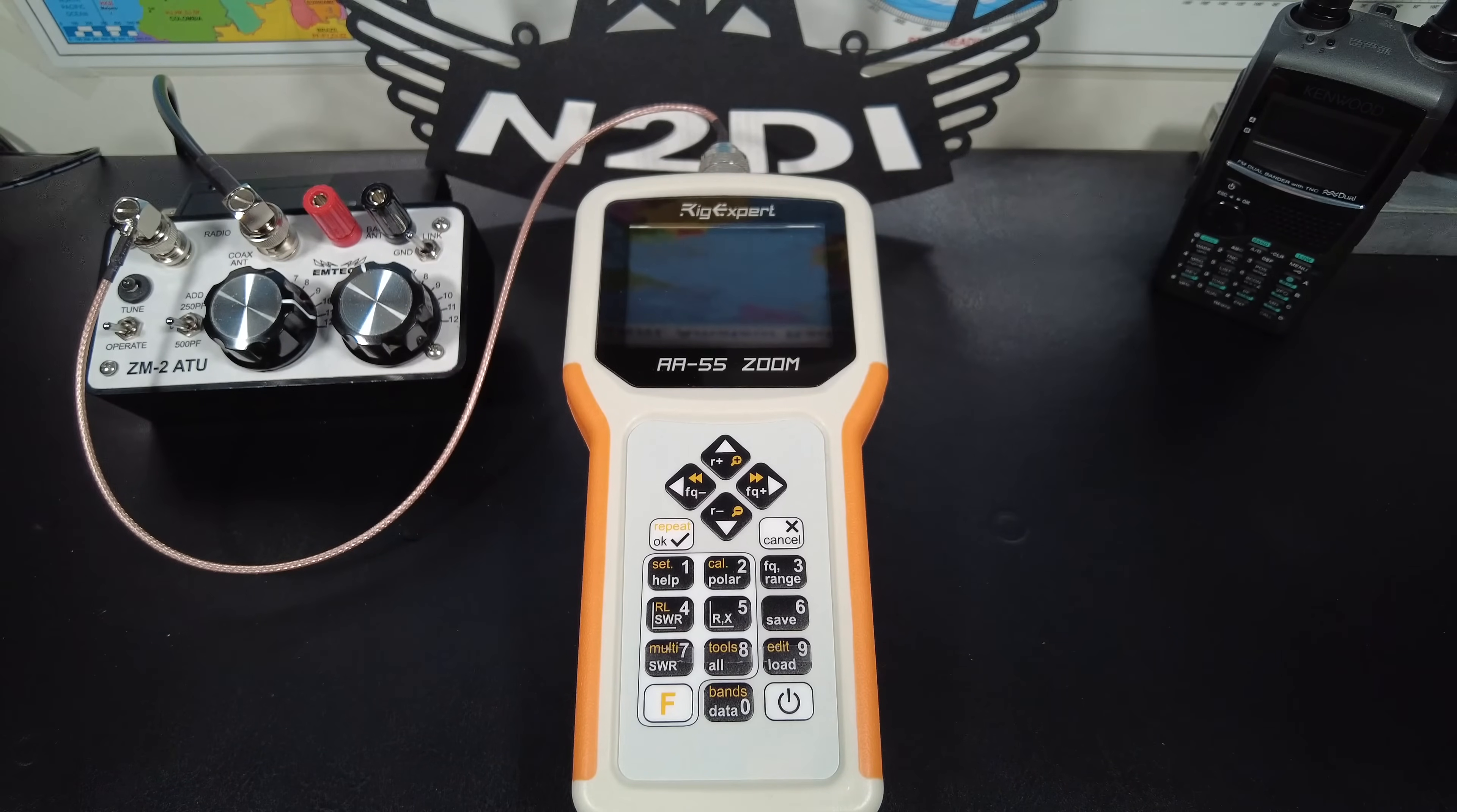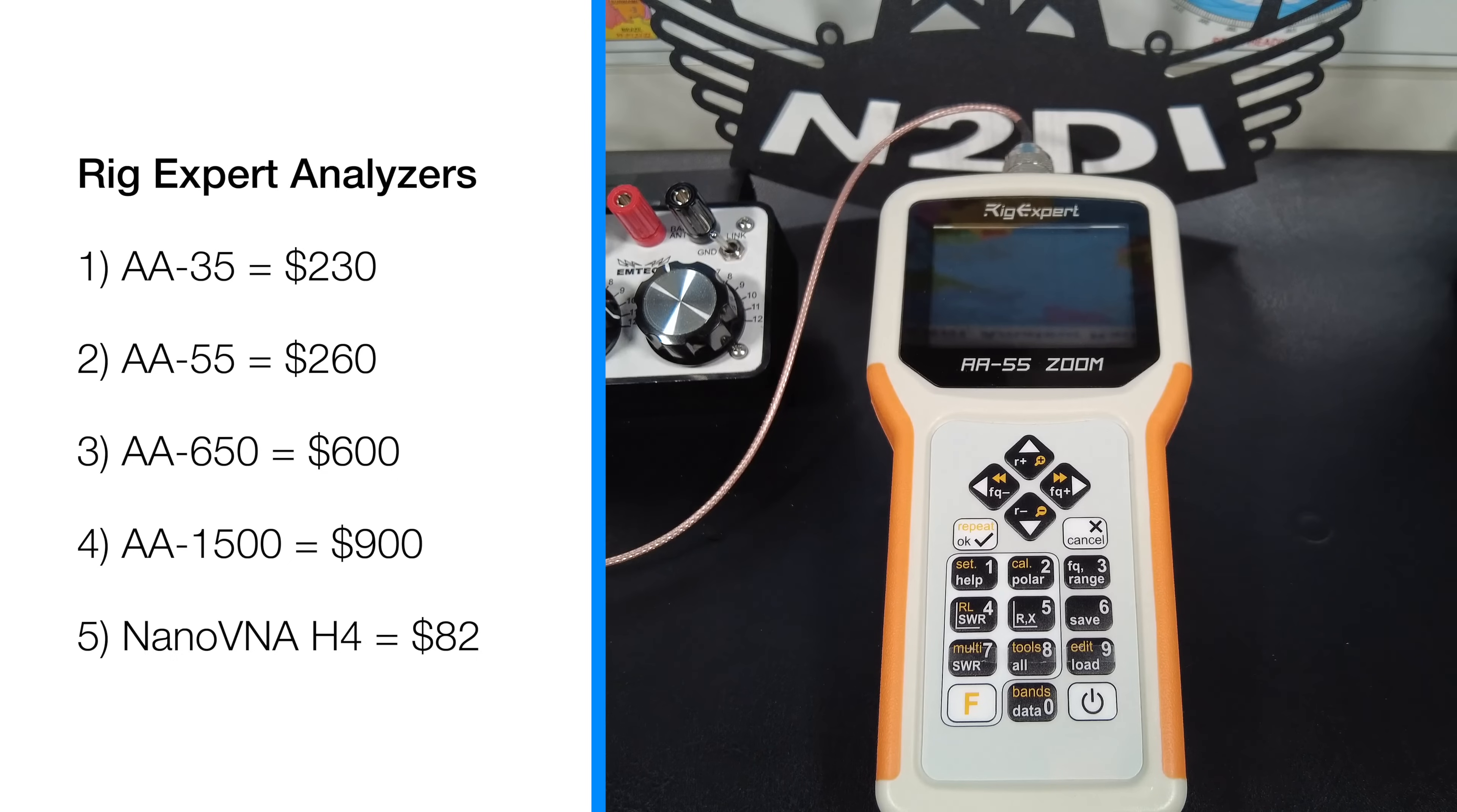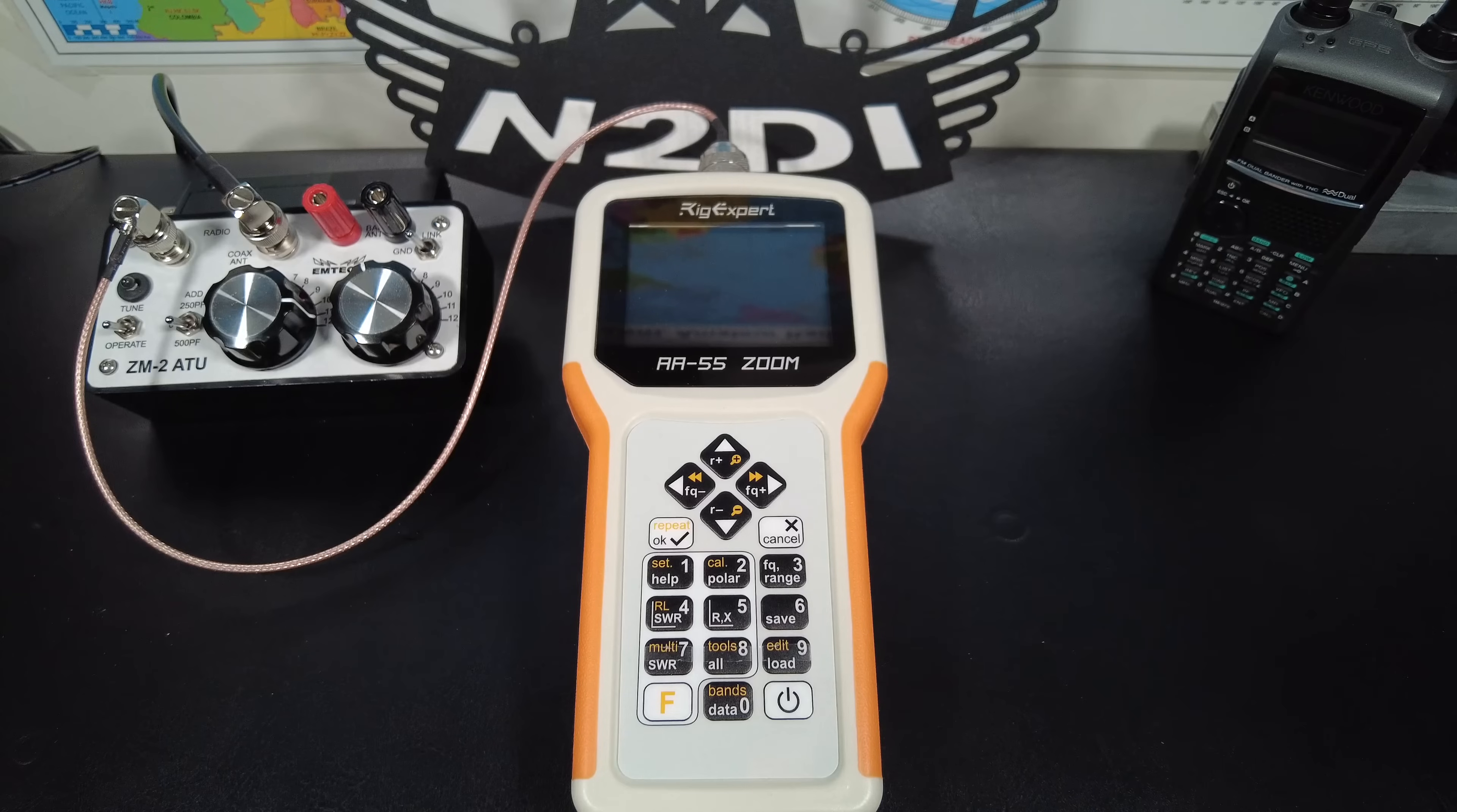Let's talk about cost and some options. The price of an antenna analyzer will go up with the maximum frequency. Let's take rig expert analyzers as an example. They're generally known as being some of the best antenna analyzers for hams. The AA35, which goes up to 35 megahertz, is about $230. The AA55, which I have here, that goes up to 55 megahertz and costs $260 currently. The AA650 goes up to 650 megahertz and costs $600. And the AA1500 goes up to 1.5 gigahertz and it costs about 900 bucks. There are other options too. A Nano VNA H4 goes for $82, and that can scan all the way up to 1.5 gigahertz too. If you want more information on a Nano VNA H4, then watch my video, Nano VNA, all the little stuff nobody explains. I'll link the video in the description below. You can use a VNA as an antenna analyzer, but they're a little bit more involved with the setup. But if you're willing to deal with that, you could save a ton of money.